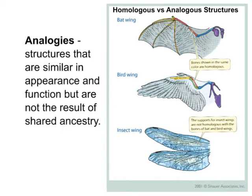While homologous structures are those that are similar and show a shared ancestry, we have a different term for structures that do not show similar ancestries — analogous structures. Analogous structures are similar in appearance and function but are not the result of shared ancestry. For example, insects fly and have wings, as do bats and birds. But birds and bats have a common ancestor, whereas the insect does not — its ancestor was an arthropod. So we would call insect wings, as opposed to bat or bird wings, analogous structures.